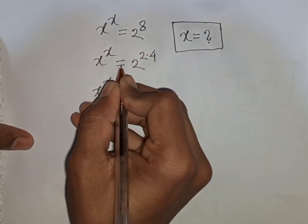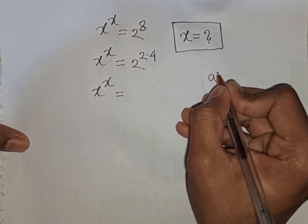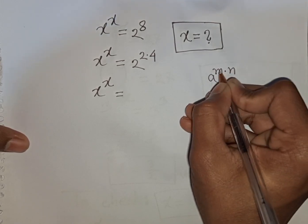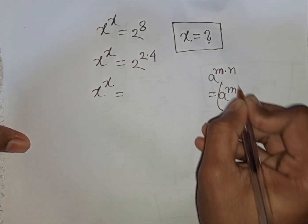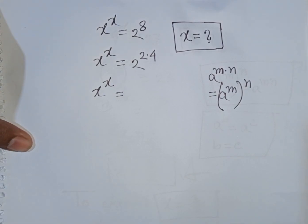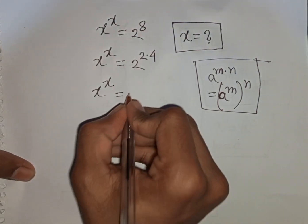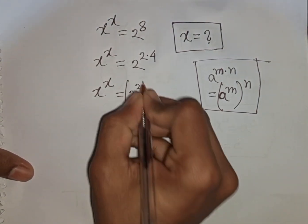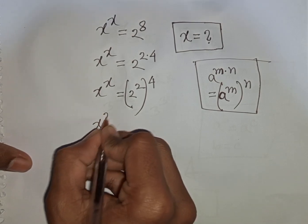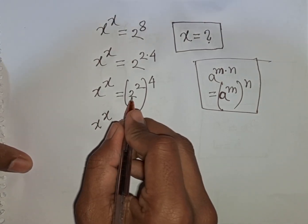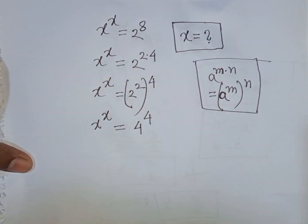Now we have x power x is equal to — here you can apply the exponential rule that a power of m times n is equal to a power m bracket power n. So according to this rule, you can write here 2 power 2 bracket power of 4. Now we have x power x is equal to 2 power 2, which is the same as 4, then power of 4.